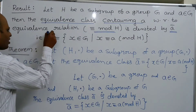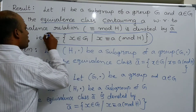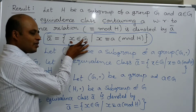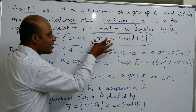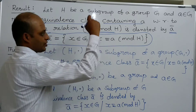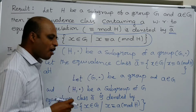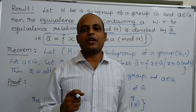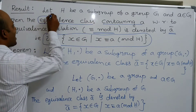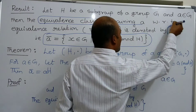What does it mean? a bar equals the set of those elements x belonging to the group G such that x is congruent to a mod H. So the set of all elements which satisfies the definition of congruence modulo H is known as the equivalence class, and it is denoted by a bar.